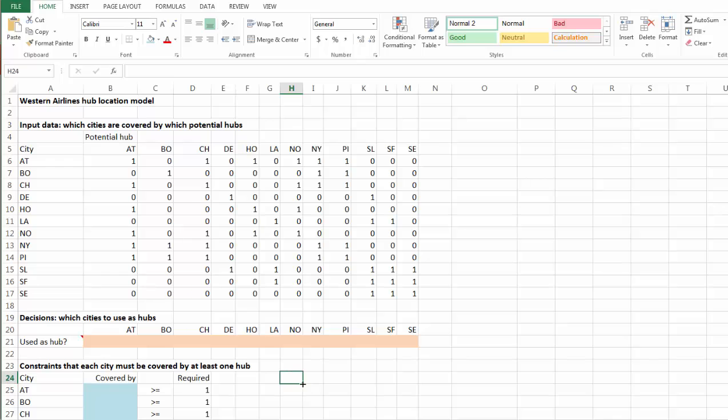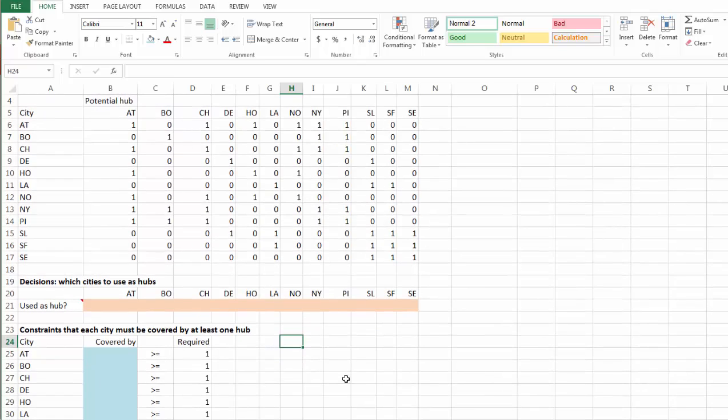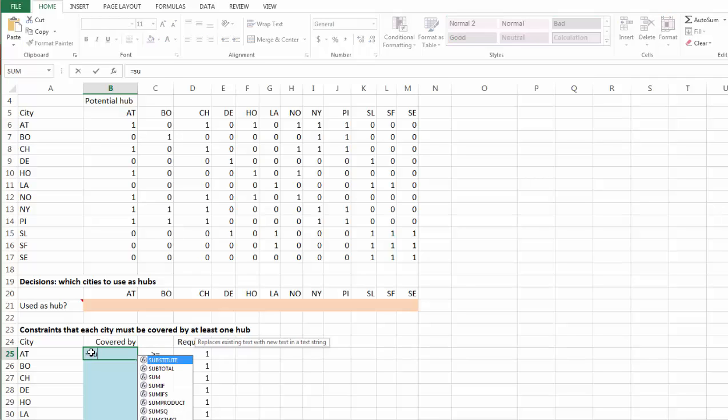Next, let's look at our constraint. Once again, let's start with Atlanta. Atlanta must be covered by at least one hub. And we know how to deal with that already. We are going to use our old friend, SUMPRODUCT.